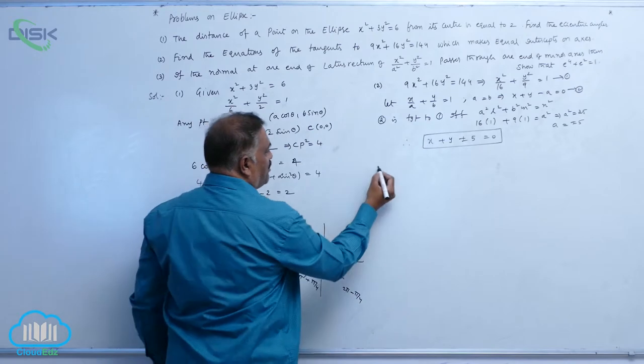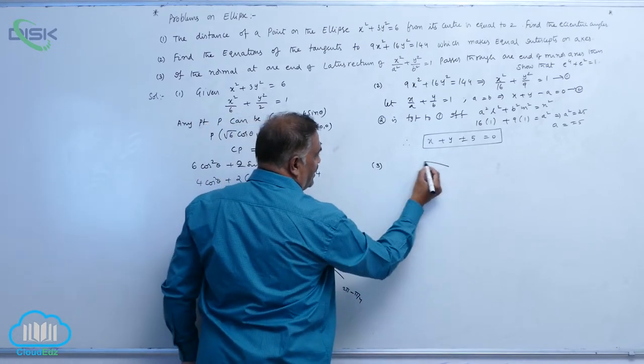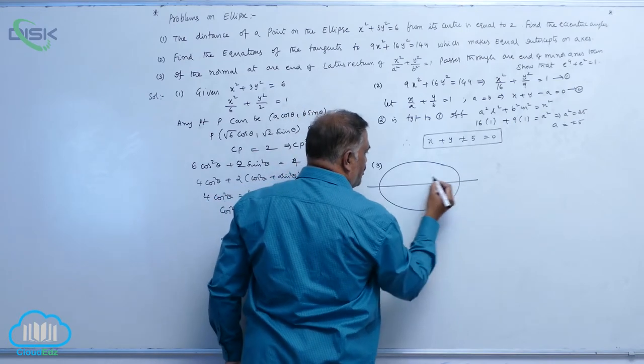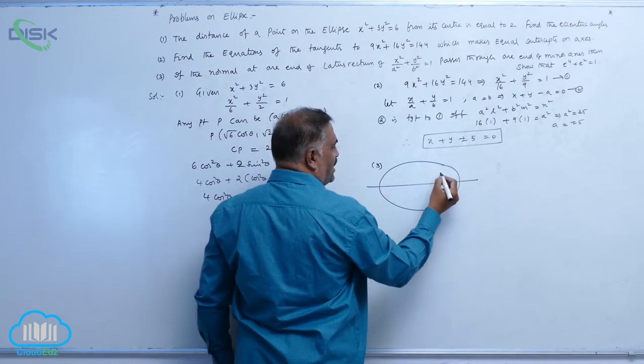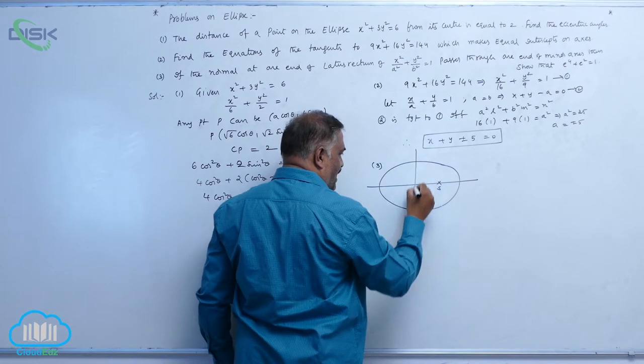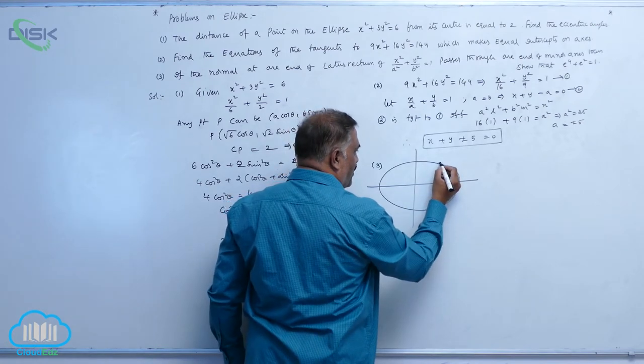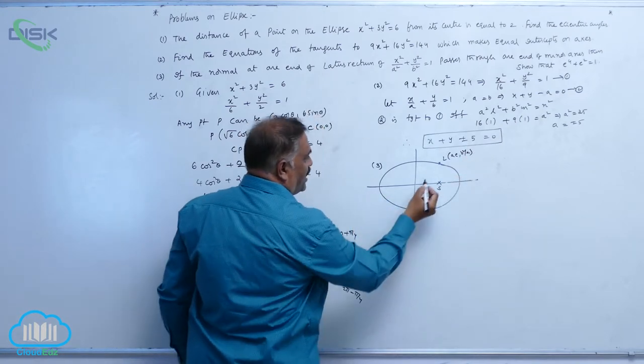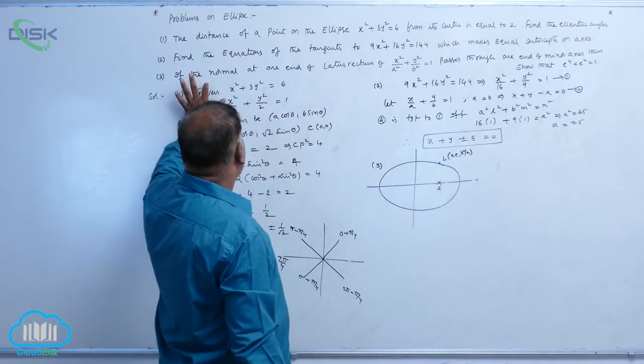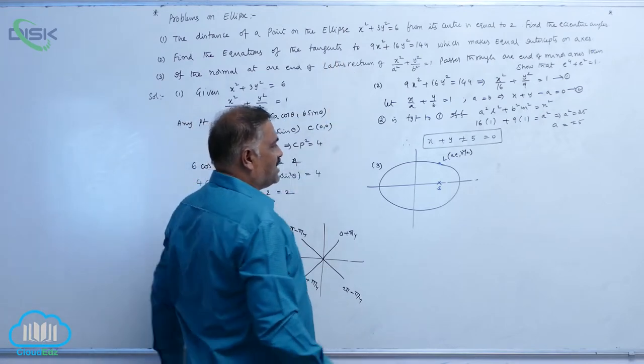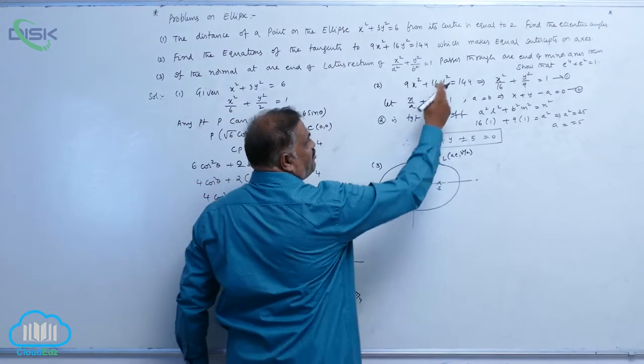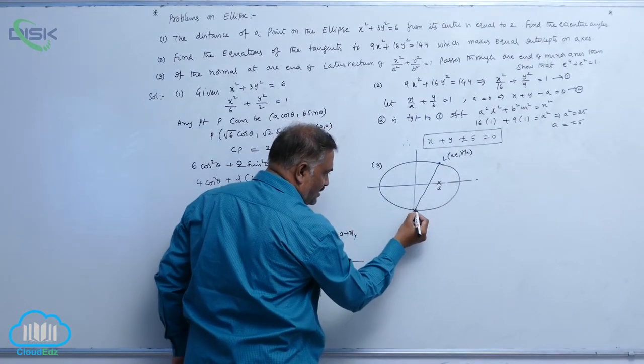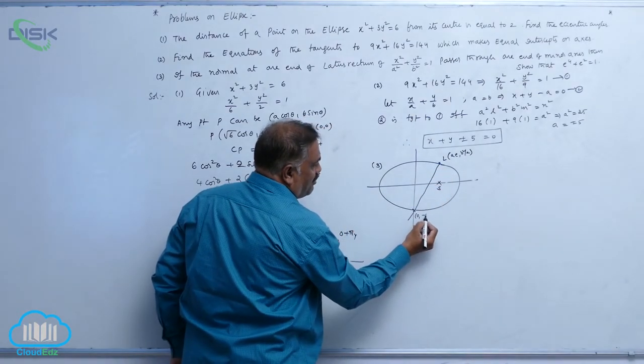Let us come to the third problem. He says that there is ellipse equation. This is going to be one focus. Let us take minor axis like this. This is one end of lattice rectum ae comma b square by a. Read the question: normal at one end of lattice rectum passes through one end of minor axis like this. So this is 0 comma minus b.